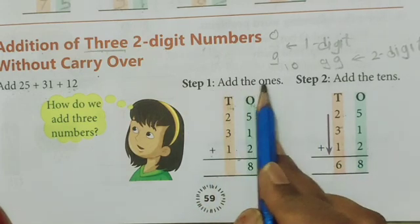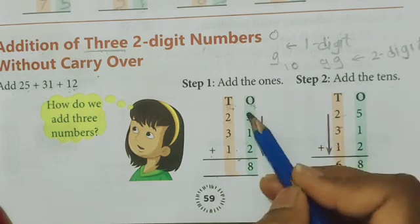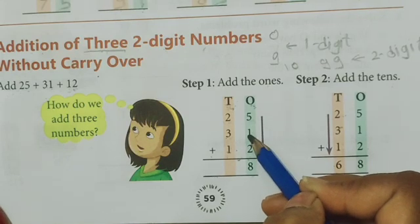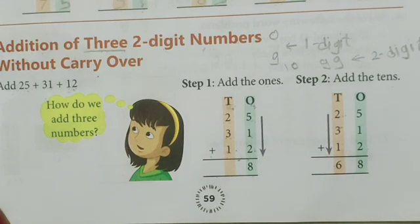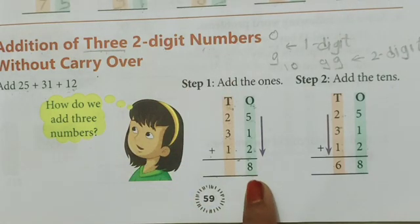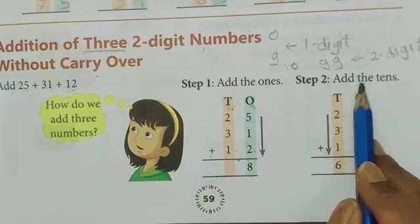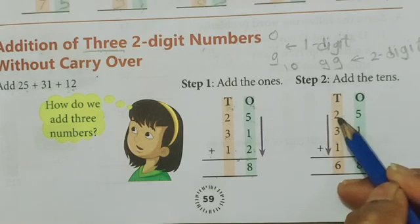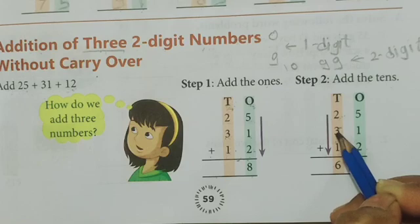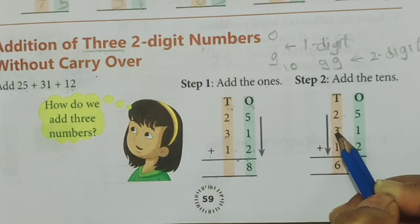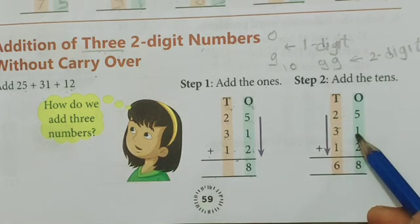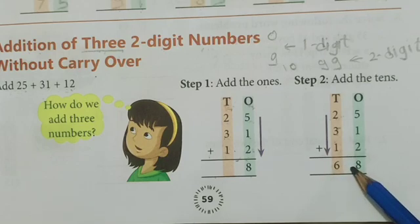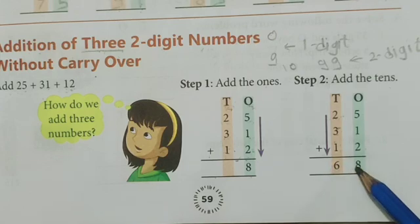Now first step is add the ones. That means ones column we have to first add. See here 5, 1 and 2. 5 plus 1, 6. 6 plus 2, 6 ke aage 2 finger count karo, 7 and 8. Therefore answer will be 8 in the ones column. Now step number second, add the tens. In the tens column 2 plus 3, 5. 5 plus 1, 6. Therefore 25 plus 31 plus 12 equals to 68.